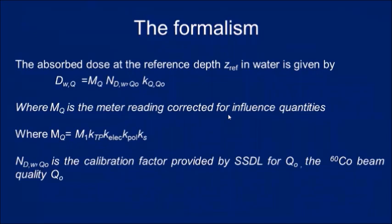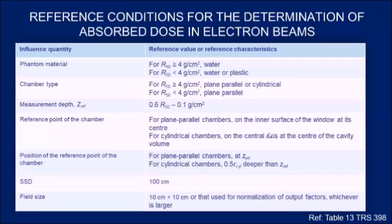The formalism is very similar to what we use for photon beams: dose to water for a particular energy equals the meter reading corrected for influence quantities, multiplied by NDW,Q0 and KQ,Q0, which converts from the reference energy to the energy in question. MQ is obtained by multiplying the meter reading by pressure-temperature correction, polarity correction, recombination correction factor, and electrometer calibration factor if calibrated separately. NDW is the calibration factor from the SSDL or PSDL for reference energy Q0, which is mostly cobalt-60.